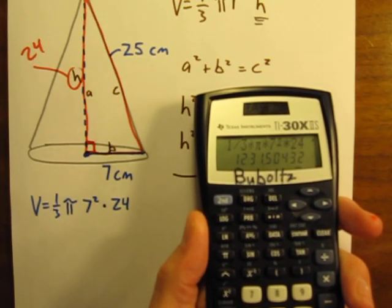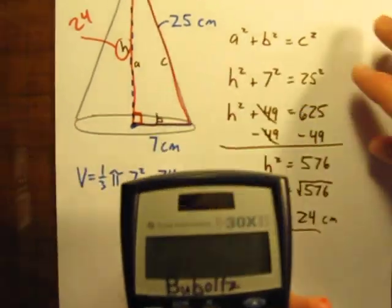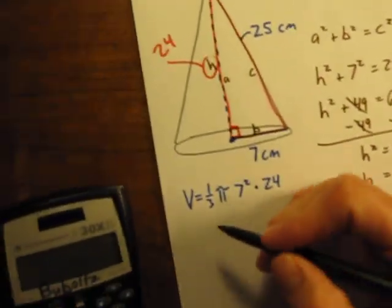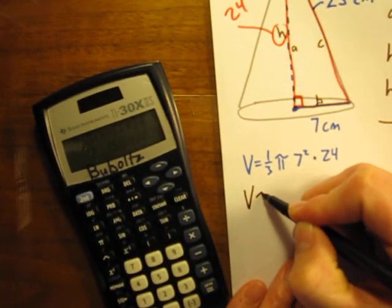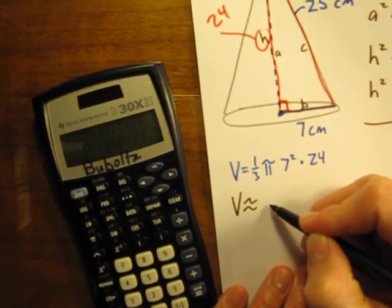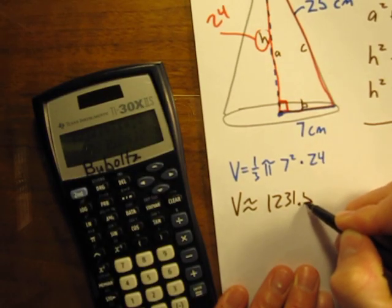1,231.5, and so I'll round that to the nearest tenth, and I can now just write that the volume